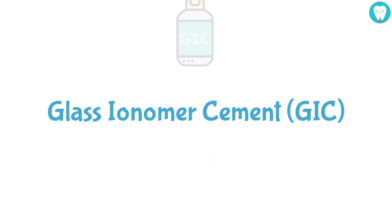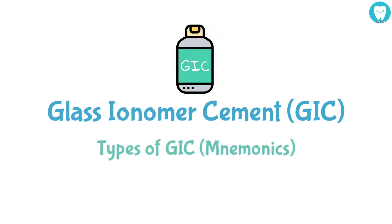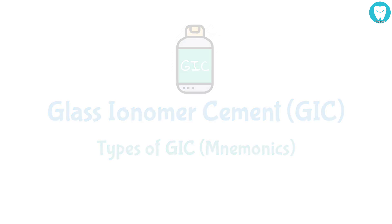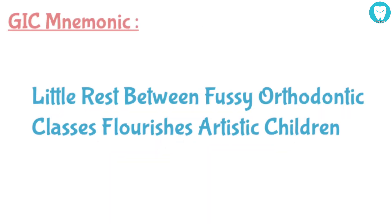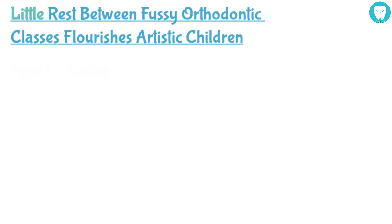GIC is an important cement in dentistry. It has nine types. Let's look at a way of remembering all nine types and their uses. The mnemonic is: 'little rest between fussy orthodontic classes flourishes artistic children.' In this, 'little' stands for...